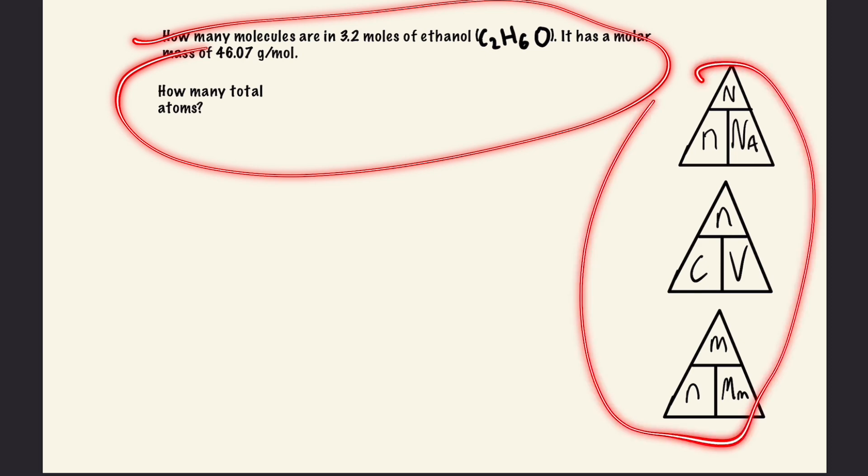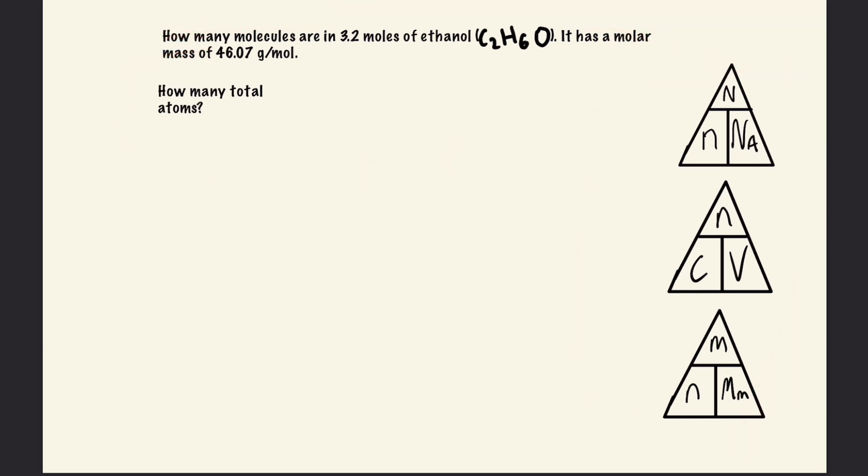Let's try a couple questions and put these three triangles to work. The first step is to write down all our information. We're given that n = 3.2 moles in the question. We're looking at ethanol, and we can calculate the molar mass by adding the molar masses of each atom individually using a periodic table.